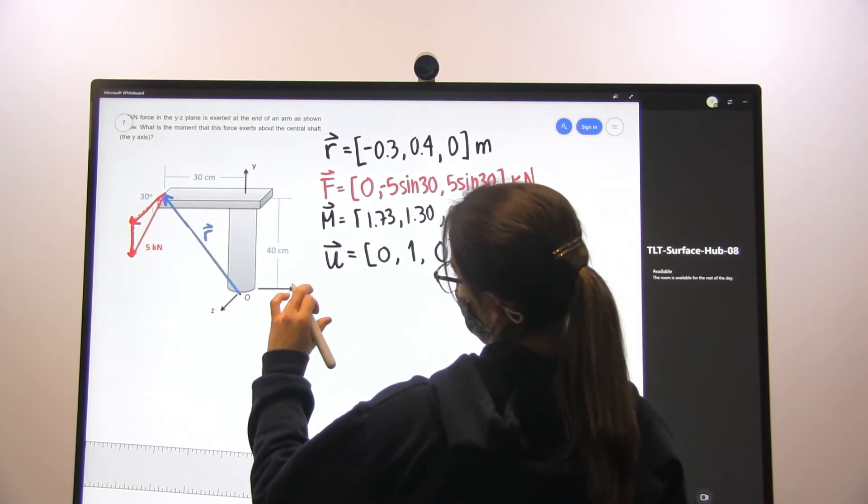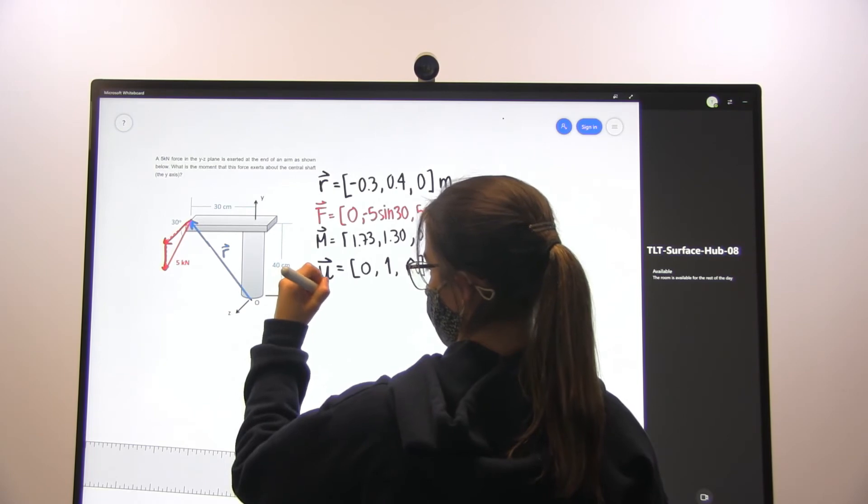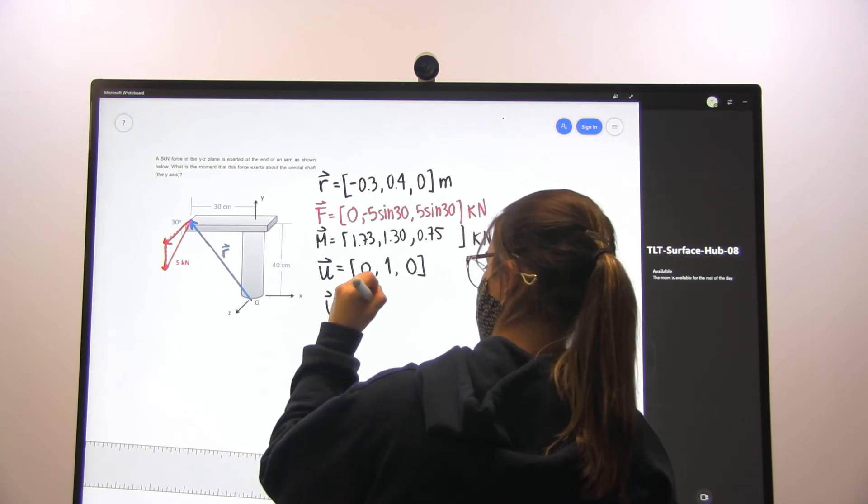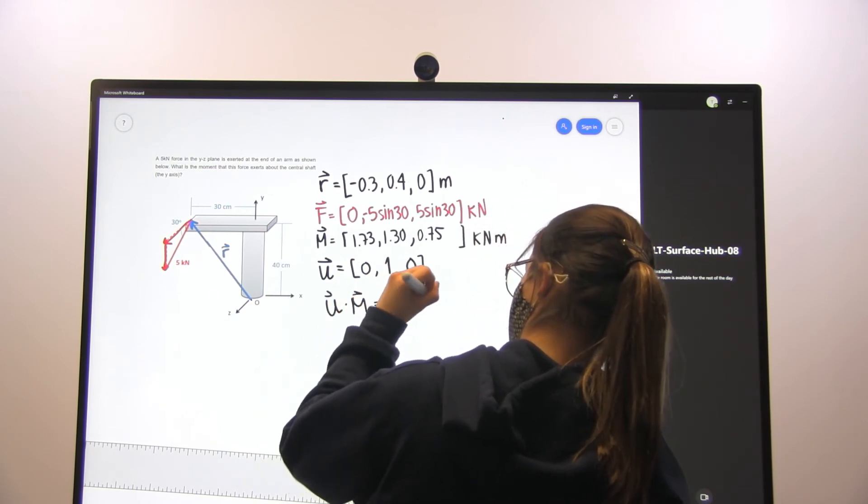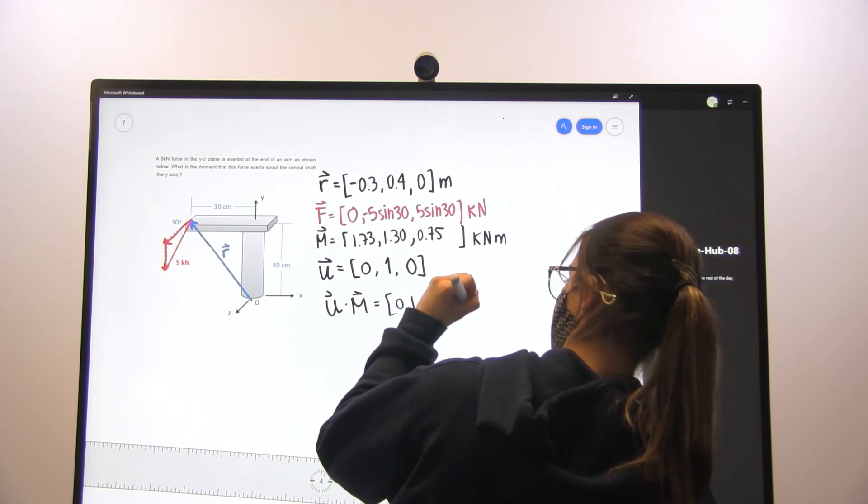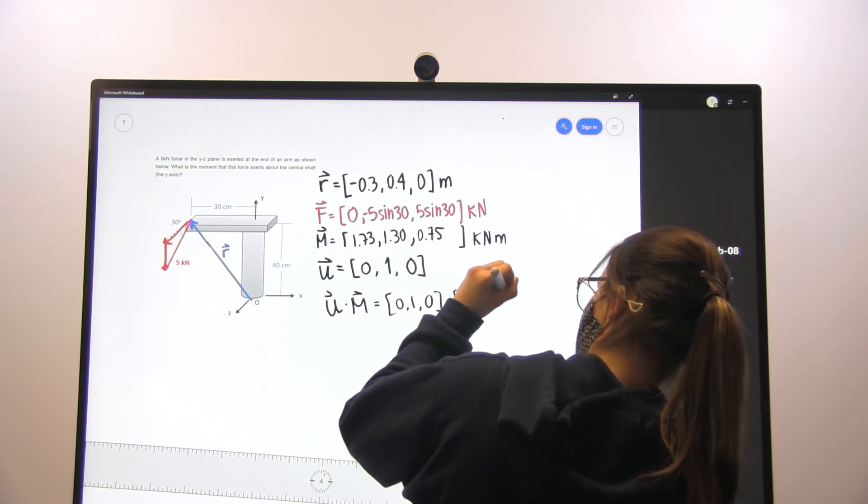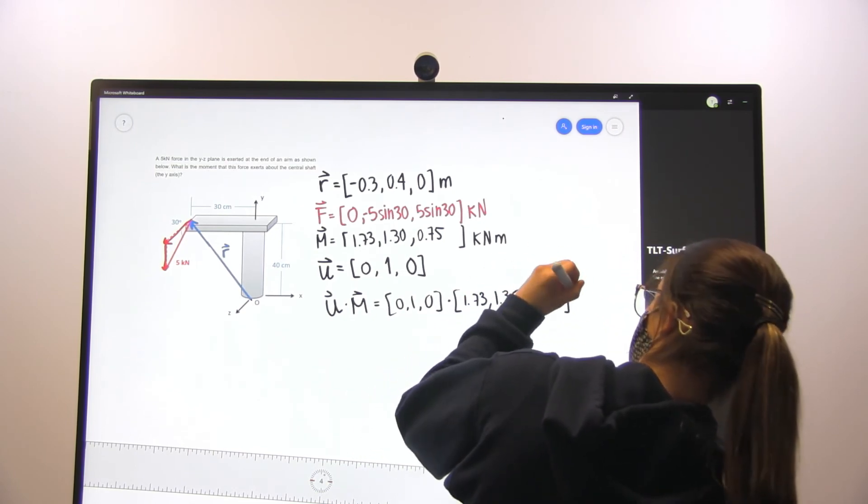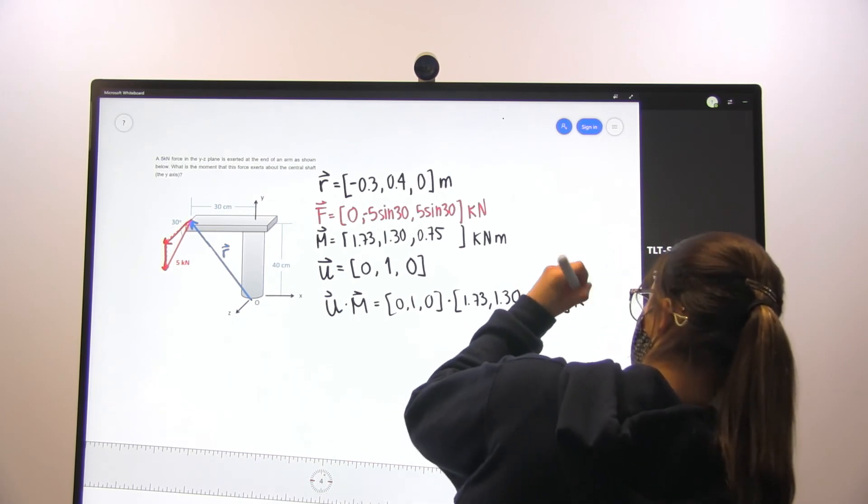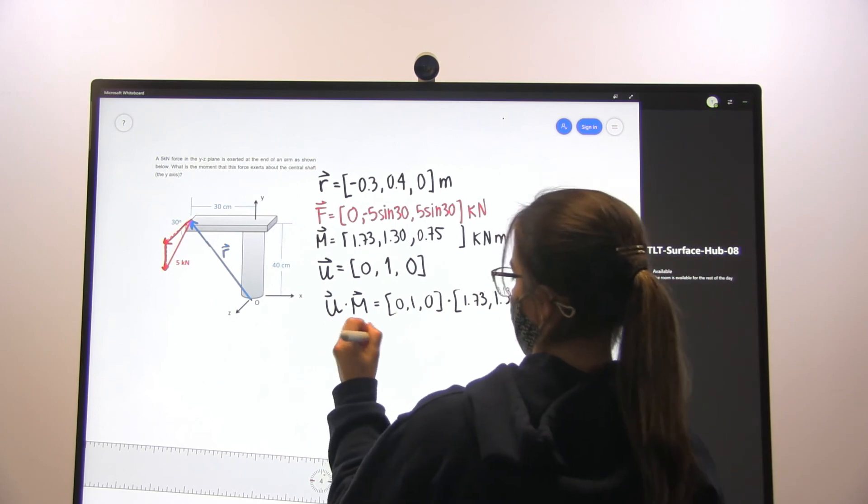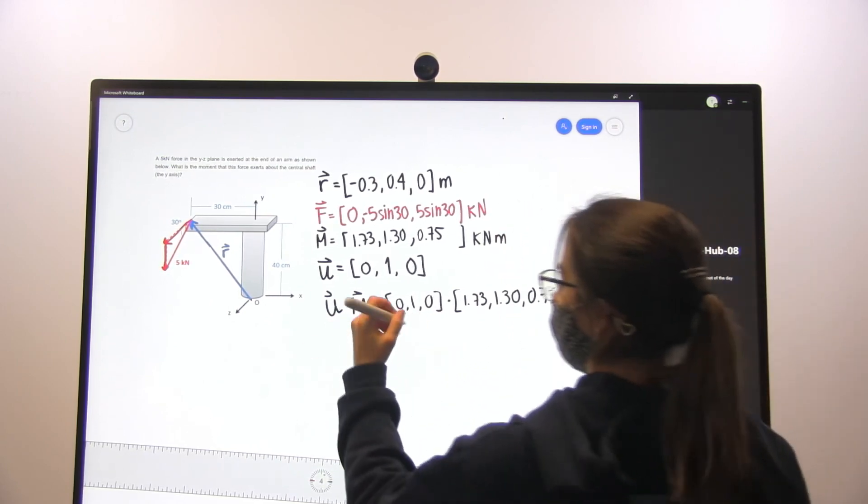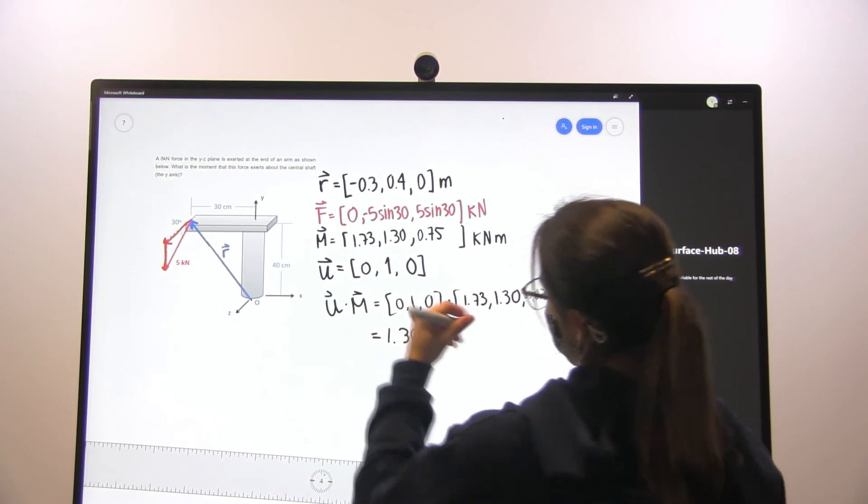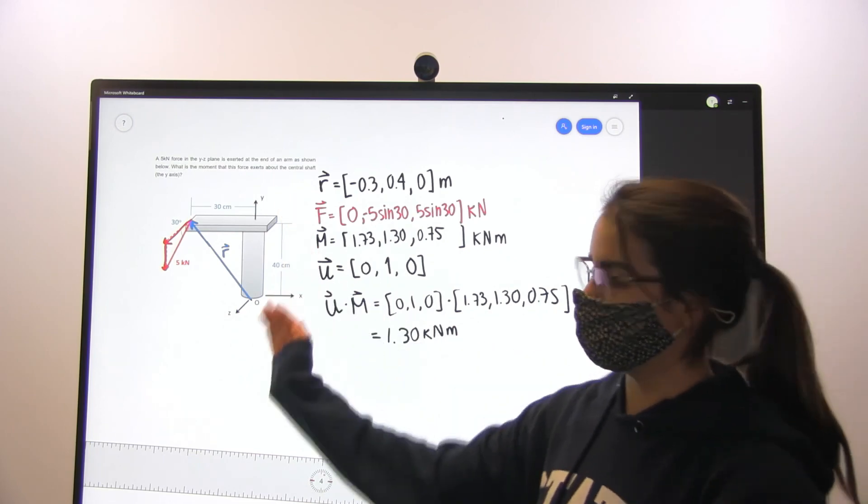Doing that is going to give us, let's see, if we do u dotted with m, that is going to be 0, 1, 0 dotted with our moment. And that is going to give us just the y-component, which is 1.30 kNm. And that is the moment that is being exerted on the y-axis.